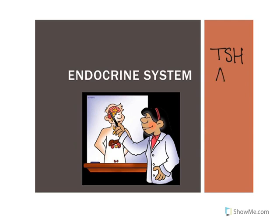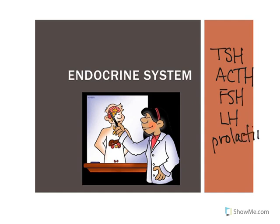The anterior pituitary produces TSH, ACTH, FSH, LH, prolactin, and growth hormone — and we're going to ignore MSH. Remember the mnemonic: all Texans love firearms, pistols, guns, munitions.